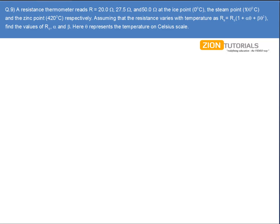A resistance thermometer reads R equals 20 ohm, 27.5 ohm, and 50 ohm at the ice point, the steam point, and the zinc point at 420 degrees Celsius respectively.